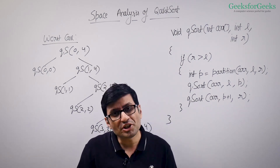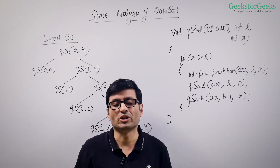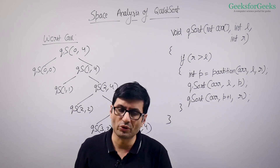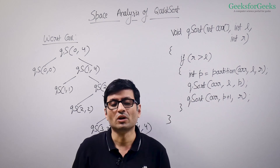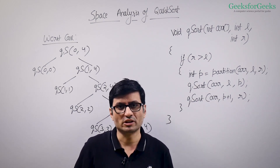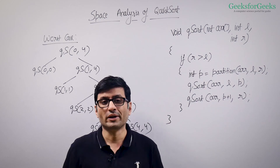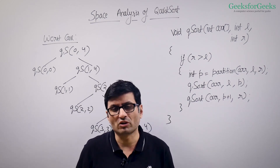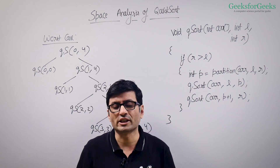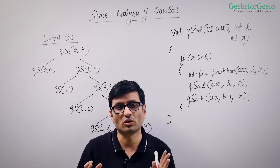The partition function of quicksort is in-place. Whether you use Hoare's partition or Lomuto partition, both are in-place — they use constant extra space. But if you consider the full quicksort algorithm, it requires extra space for the recursion call stack.